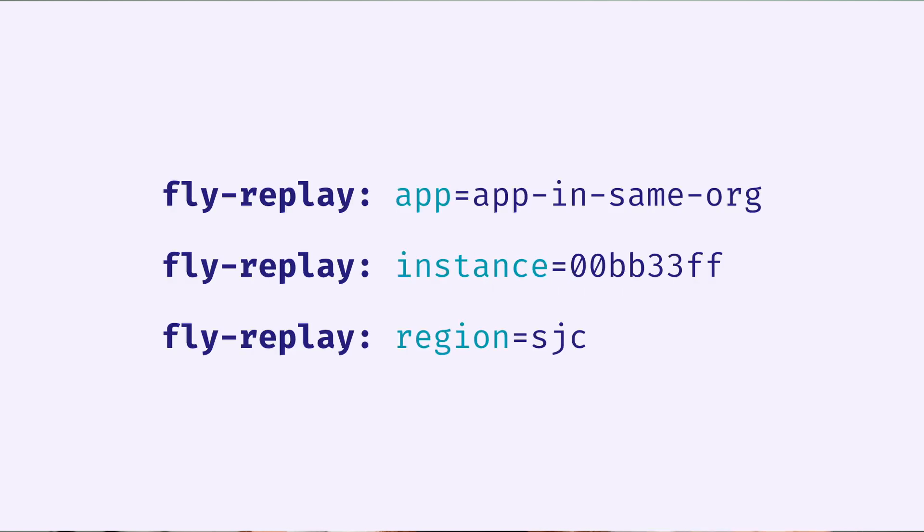Fly Replay is literally just a header that allows you to dynamically route requests to different apps, machine instances, regions, or some combination of those.